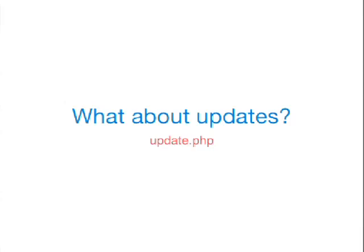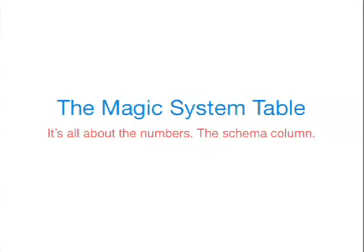Let's talk about the update system - an important topic. There is a side piece of logic - it's called update.php. When you request a page it goes through index.php; when you install it goes through install.php. When you want to do database updates, you visit update.php or use Drush and run drush updb. It goes to the system table, which contains things like module name, file paths, and weight - but also a very important number called schema version. The schema number in that table matches up to an update function in your module's .install files.